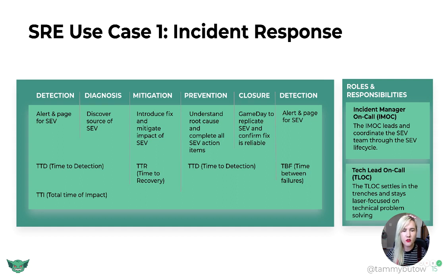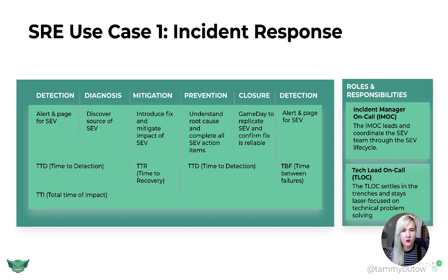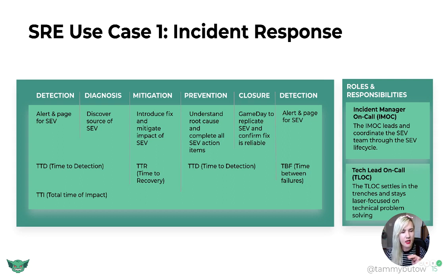Then we do mitigation — this is where we put in our band-aid fix, stop the bleeding, introduce a fix, and mitigate the impact of the SEV. We try to go really fast — this is TTR, time to recovery. Then we move on to prevention: we try to understand the root cause or causes and complete all SEV action items. As an example, an incident I previously worked on happened every Tuesday night, where a batch job would hammer the database and actually cause incidents — the same batch job every Tuesday at the same time.